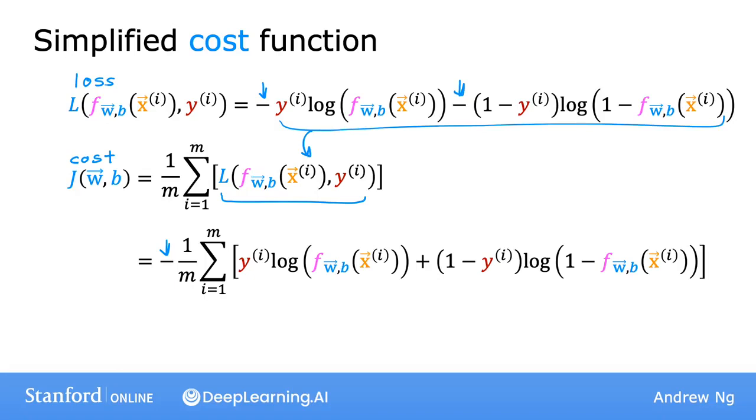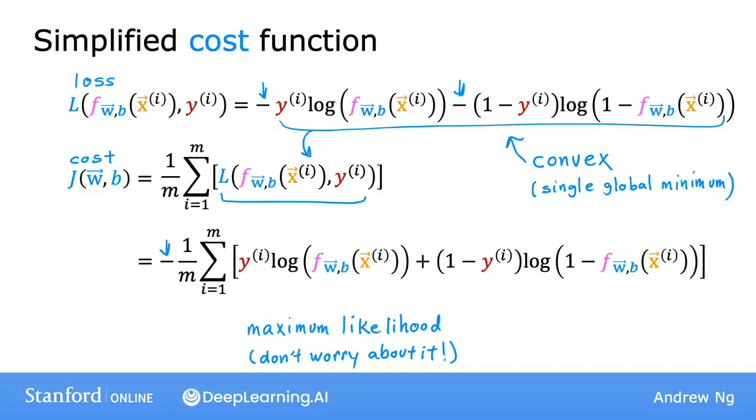Now you might be wondering why did we choose this particular function when there could be tons of other cost functions we could have chosen. Although we won't have time to go into great detail on this in this class, I'd just like to mention that this particular cost function is derived from statistics using a statistical principle called maximum likelihood estimation, which is an idea from statistics on how to efficiently find parameters for different models. And this cost function has the nice property that it is convex.